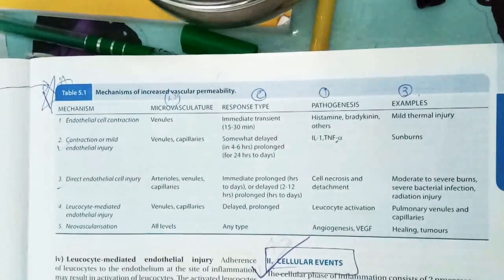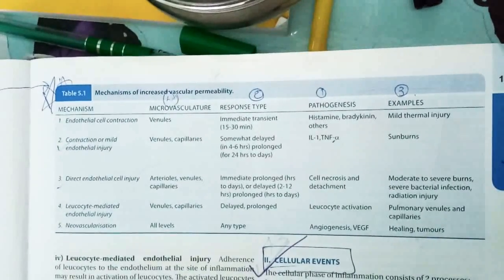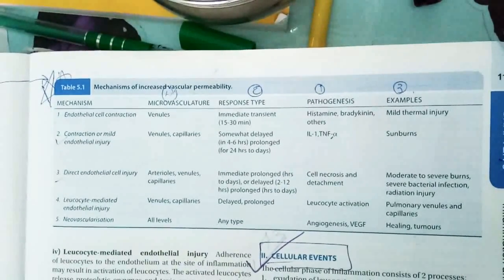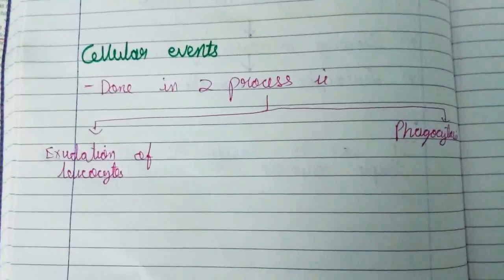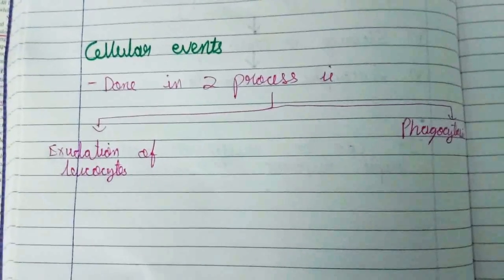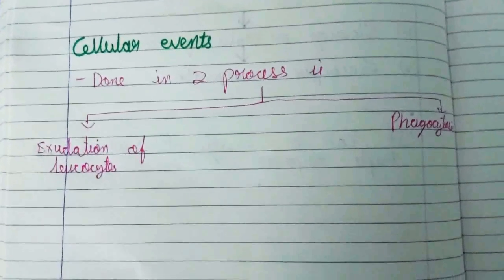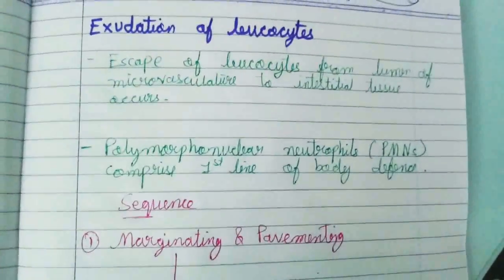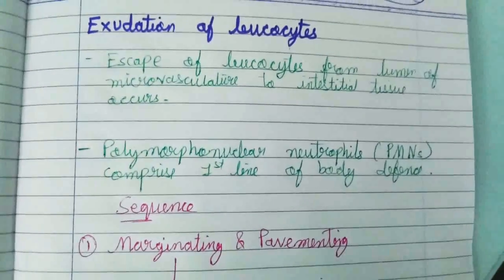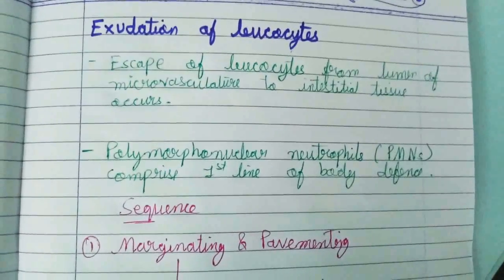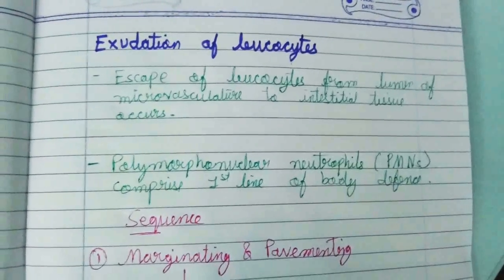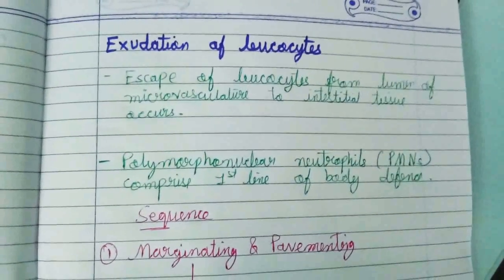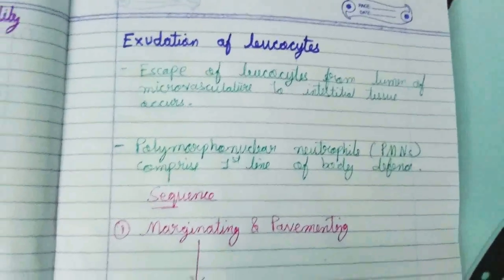That covers vascular events. Now moving to cellular events, which are divided into two processes: exudation of leukocytes and phagocytosis. In exudation of leukocytes, the escape of leukocytes from the lumen of the microvasculature to the interstitial tissue occurs. PMNs — polymorphonuclear cells — comprise the first line of body defense.